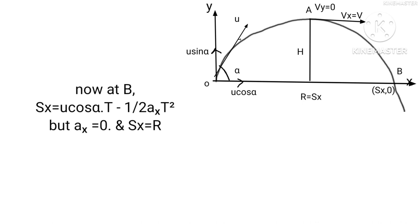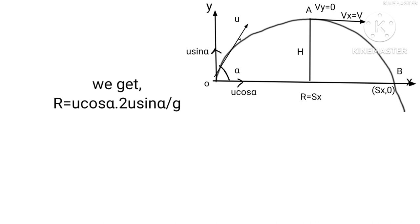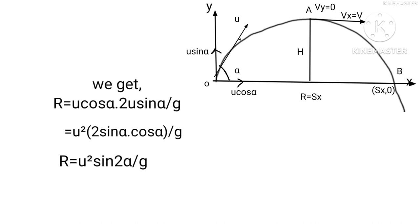Now at B, Sx equals U cos α · T minus (1/2)·ax·T². But ax equals 0 and Sx equals R. Therefore R equals U cos α · T. Putting T equals 2U sin α upon g, we get R equals U cos α · (2U sin α / g), which gives R equals U² · 2 sin α cos α upon g. Therefore R equals U² sin 2α upon g.